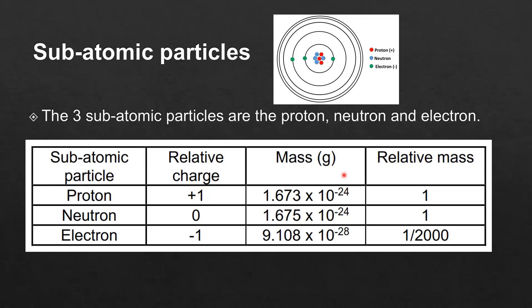the mass in grams and the relative mass. So starting with the proton, it has a relative charge of plus 1, a mass of 1.673 times 10 to negative 24 grams and a relative mass of 1.